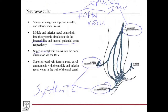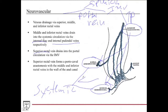An important clinical point, and this is very high yield on board exams — we talked about this in the abdominal lecture as well — is the portocaval anastomosis. The middle and inferior rectal veins form anastomoses with the superior rectal vein. This is relevant in portal hypertension: if there's backup of pressure into the superior hemorrhoidal vein, venous drainage will shift into the middle and inferior rectal veins and then into the systemic circulation.